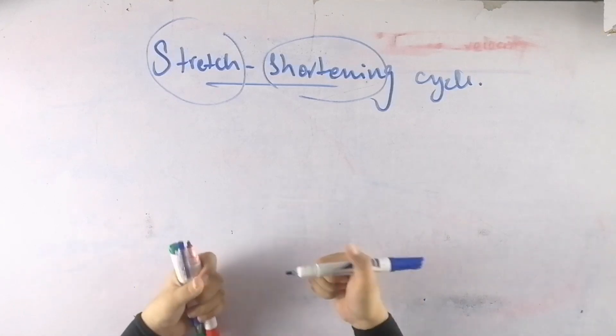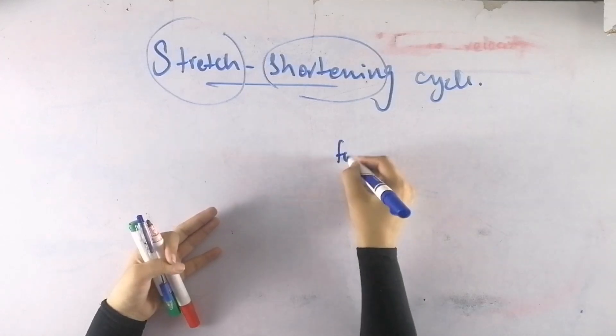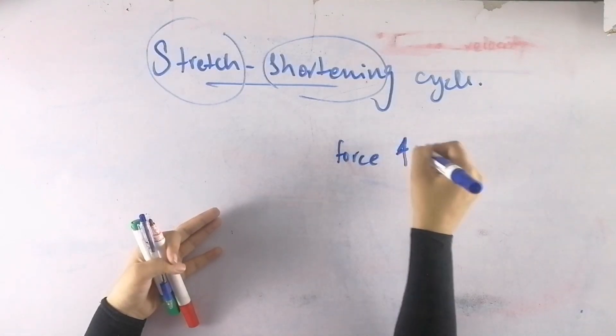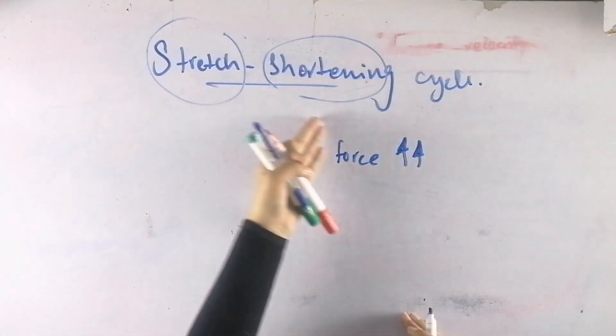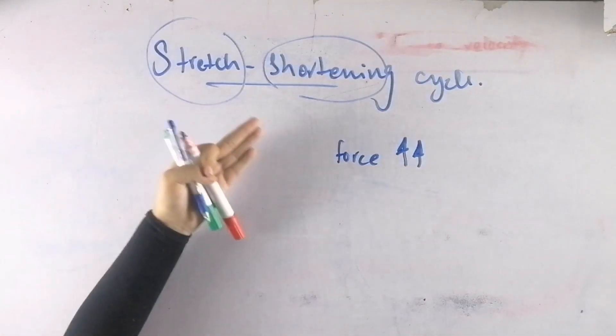When we stretch the muscle and then shorten it, the force of production is maximum. So what does the stretch-shortening cycle have as a benefit? When we pre-stretch before the contraction, we get maximum force.